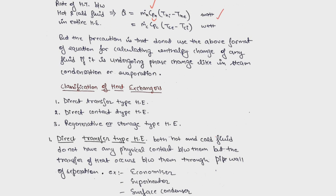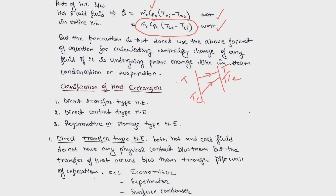This equation should not be used when one of the fluids is changing its phase. For example, if the hot fluid is at constant temperature and changing phase while the cold fluid is increasing in temperature from Tci to Tce, you should use only the formula for the cold fluid side. If the hot fluid is changing phase, use the cold fluid formula; if the cold fluid is changing phase, use the hot fluid formula instead.